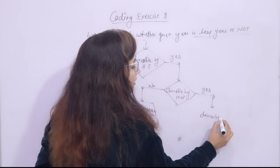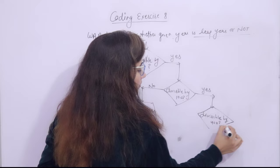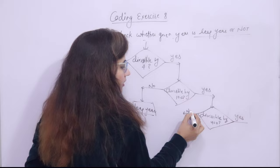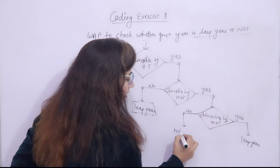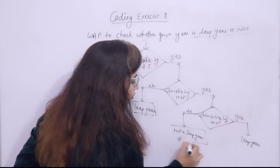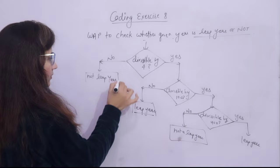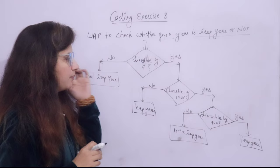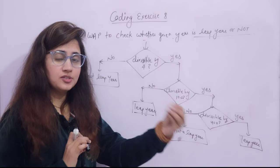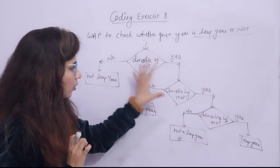We take one more condition: divisible by 400? Two cases — yes or no. If divisible by 400 is yes, then leap year. If no, then not a leap year. So if you have written down the algorithm you can easily convert it to a flowchart. Now pause the video and try to write this program using if-else, nested if, nested if-else.